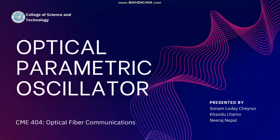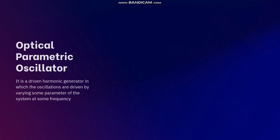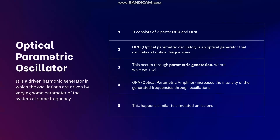Good morning. Today let's talk about the Optical Parametric Oscillator. It is a driven harmonic generator in which the oscillations are driven by variance in parameters of the system at some frequency.